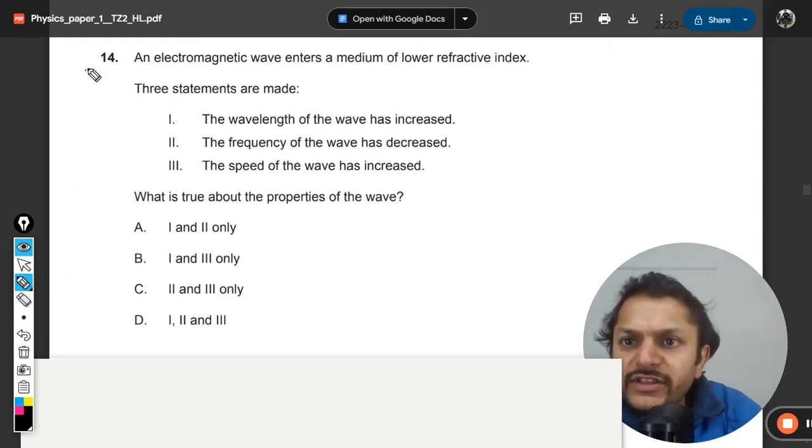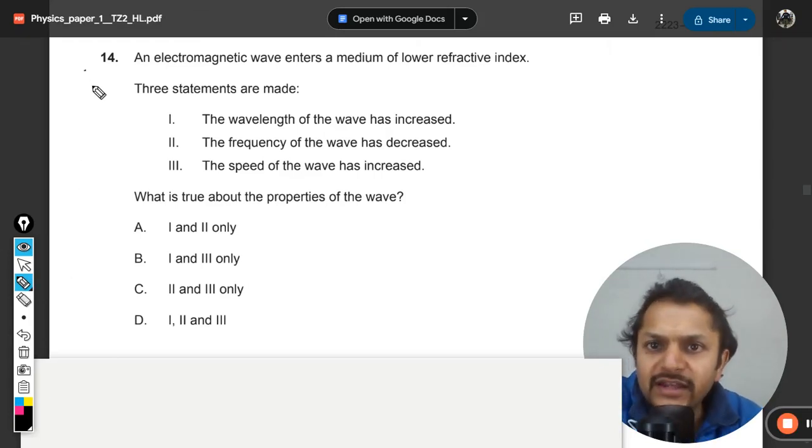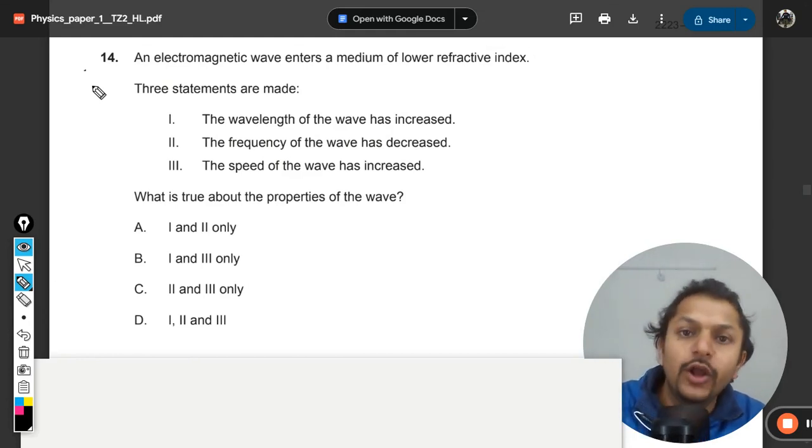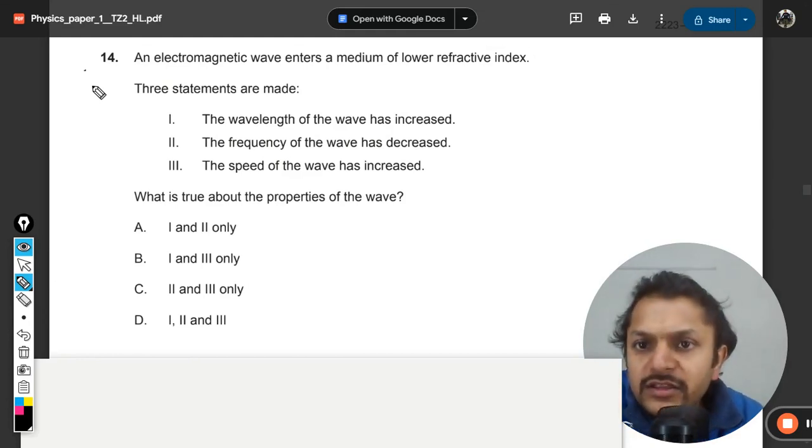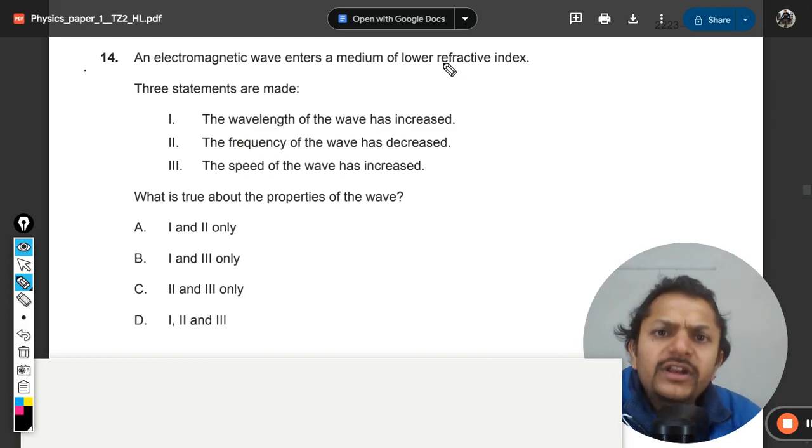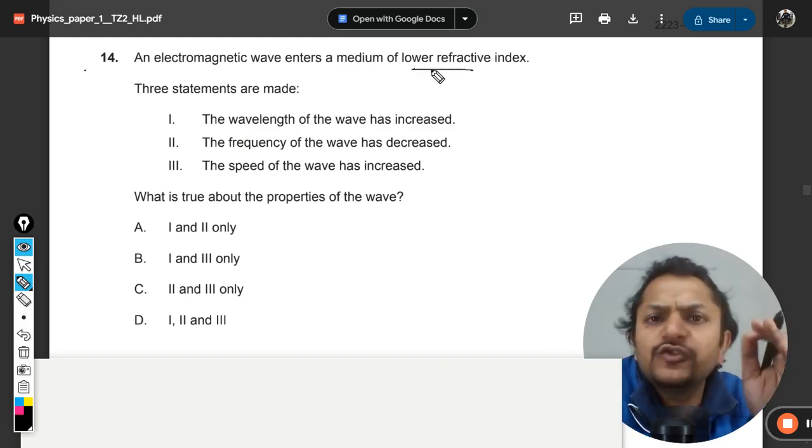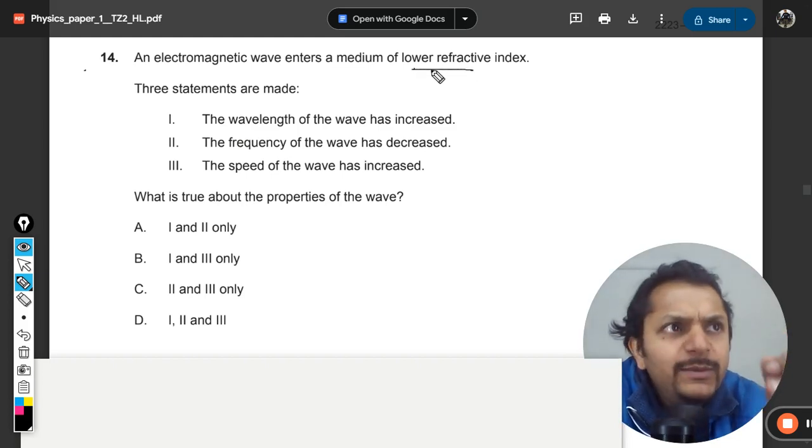Okay, let us see what is there in this question. An electromagnetic wave enters a medium of lower refractive index. Three statements are made. Lower refractive index means that we can just assume a particular case that might be the light is coming out from water and it is entering into air.